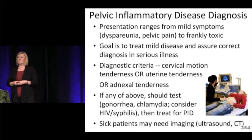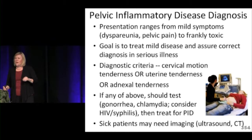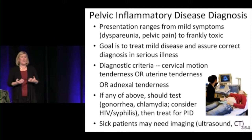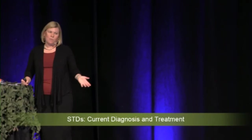Diagnosing PID requires clinical findings: cervical motion tenderness, uterine tenderness, or adnexal tenderness — combined with discharge or suspicion. It's a clinical diagnosis. Once you suspect PID, send tests to confirm the organism (GC, chlamydia, HIV, syphilis) and treat. For sicker patients — tachycardic, very tender abdomen — you may need imaging. Ultrasound is preferable over CT because uterine and ovarian structures are better visualized.